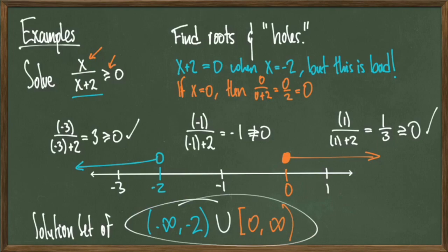Reading this off the number line, I get the interval negative infinity to negative 2, open at negative 2, union with 0 to infinity, closed at 0. To summarize: I find the roots and the holes, place those points on the number line as benchmarks, select test points in between, plug them in to see if I'm positive or negative, let the inequality tell me which ones I care about, then color in the relevant portions and read off the interval to get my solution set.